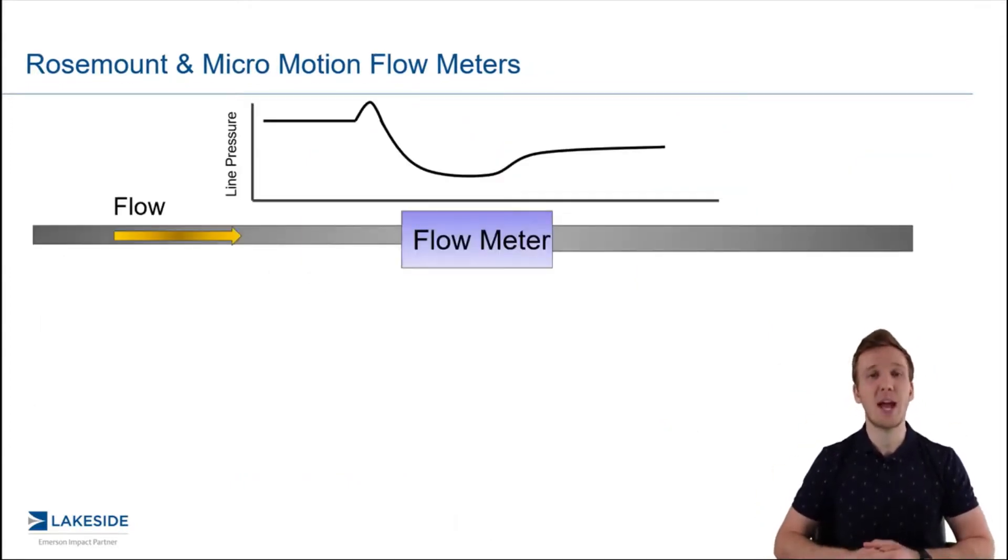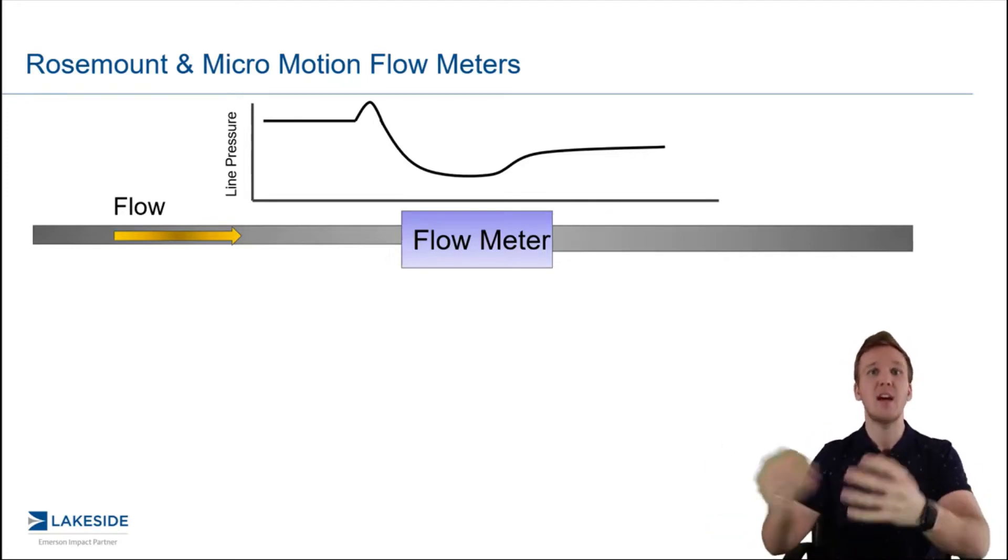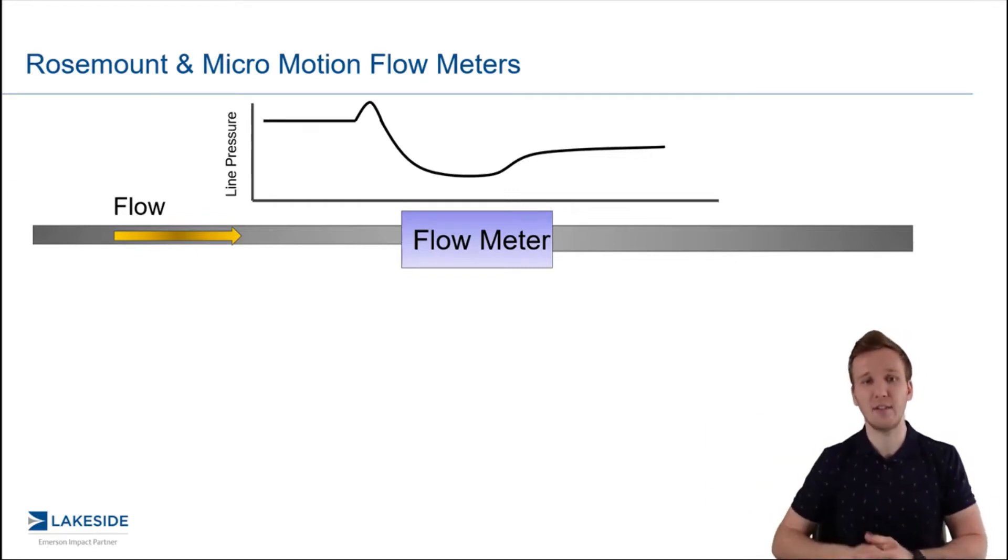Take a look at this example here. We have some sort of product traveling or flowing through a pipe and then it comes across a flow meter. In this example, it could be a differential pressure flow meter, it could be a Coriolis flow meter, it really doesn't matter. Now, if we look at the graph above, this is depicting the line pressure for this product as it's traveling its course before, during, and after the flow meter.